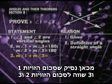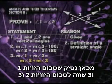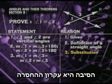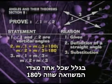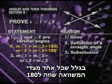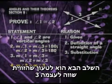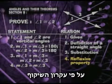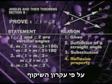Next, we'll set the sum of the measures of angle 1 and angle 3 equal to the sum of the measures of angle 2 and angle 3. Our reason is the substitution property, because as we saw in step 2, each side of the equation equals 180. Our fourth step is setting the measure of angle 3 equal to the measure of angle 3. Our reason: it's the good old reflexive property.